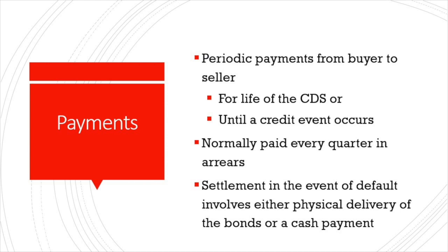It is also possible for deals to be made where payments are made every month, every six months, or every 12 months, and these payments can be made in advance. Contracts with a maturity of five years are the most popular, but other maturities such as one, two, three, seven, and ten years are not uncommon. Usually these contracts mature on one of the following standard dates: March 20th, June 20th, September 20th, and December 20th.